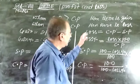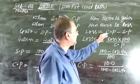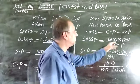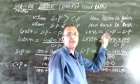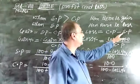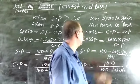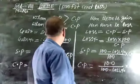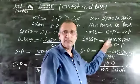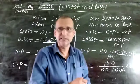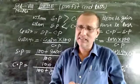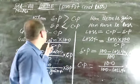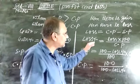Loss is equal to CP minus SP. We have to subtract the selling price from the cost price, that is why loss is equal to CP minus SP. And loss percent is equal to loss by CP into 100. It is always calculated on the cost price — children sometimes do this wrong. Gain percent and loss percent are both calculated on the cost price.